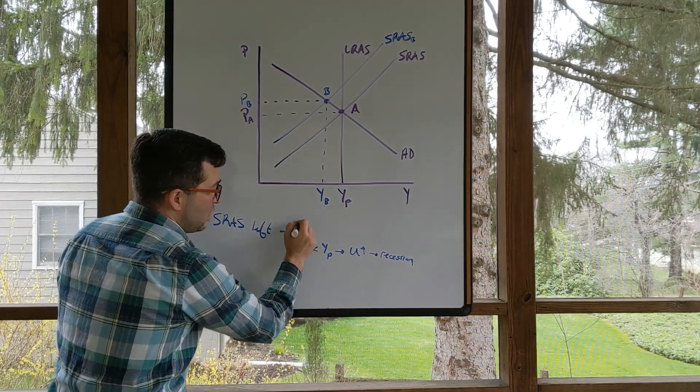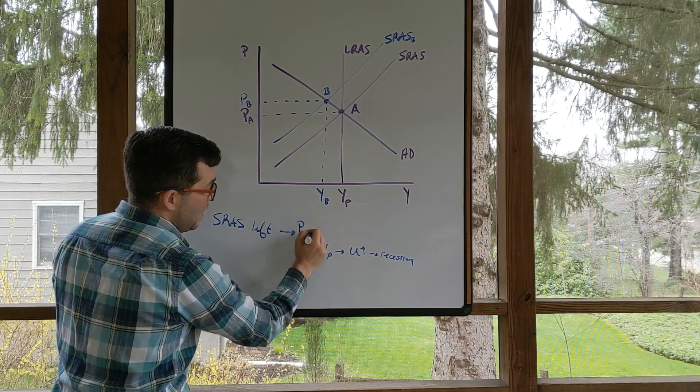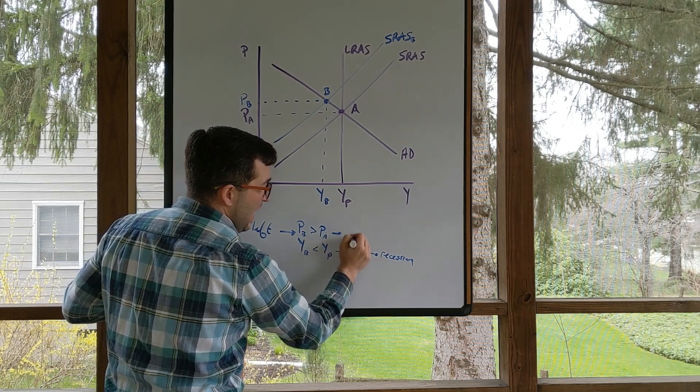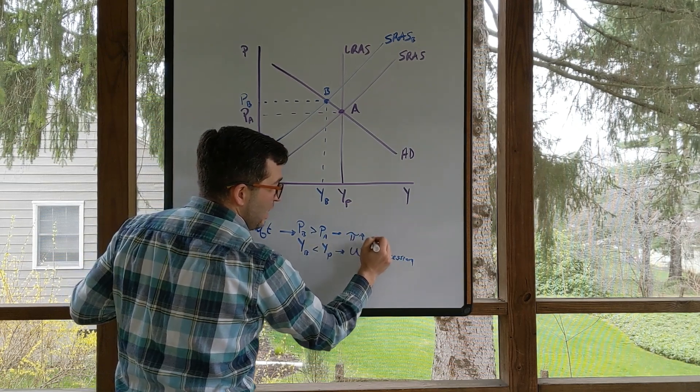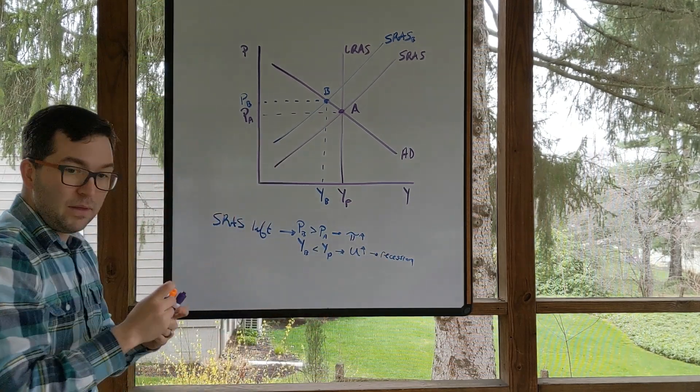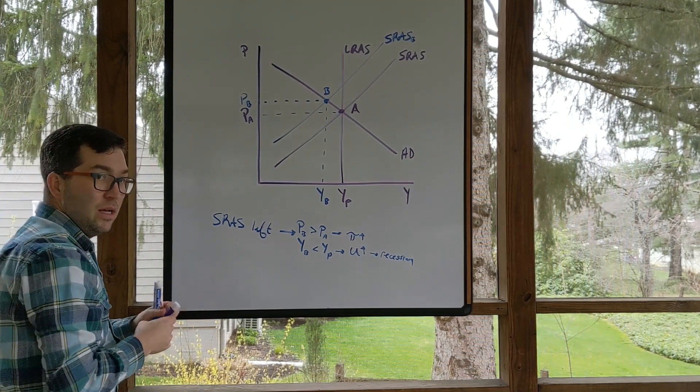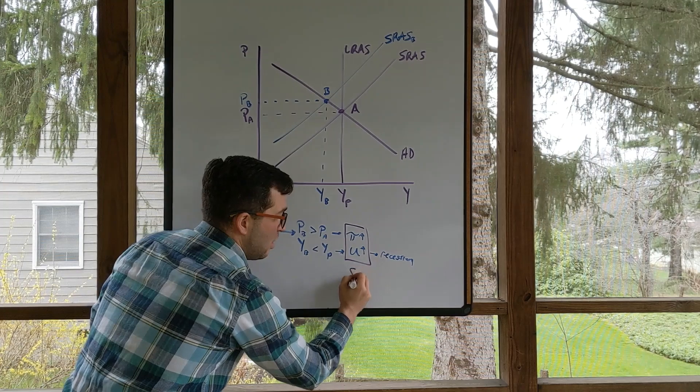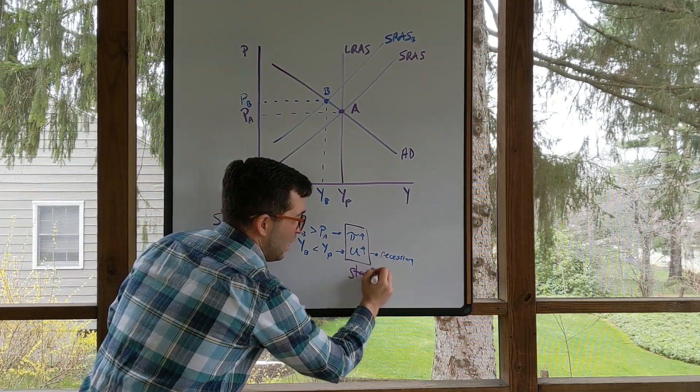We also saw P sub B greater than P sub A, which means we're seeing higher levels of inflation in this recession. This right here, this situation we're seeing, this is called stagflation.